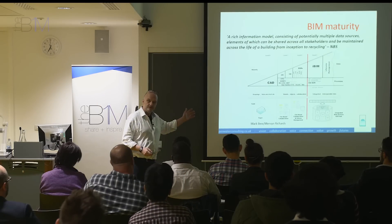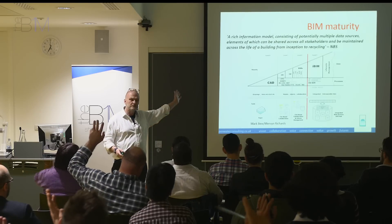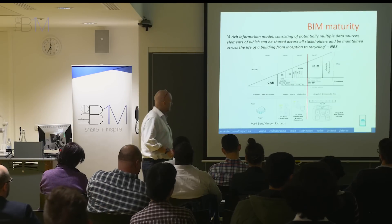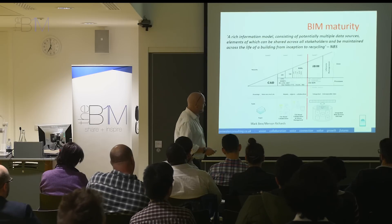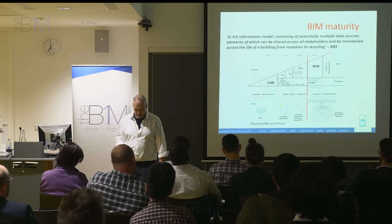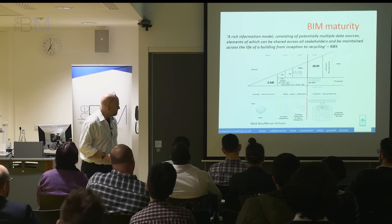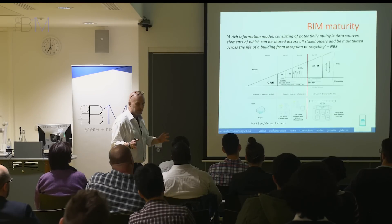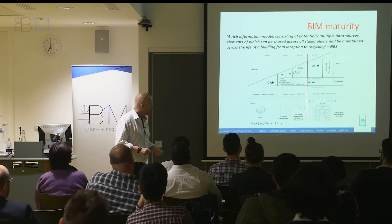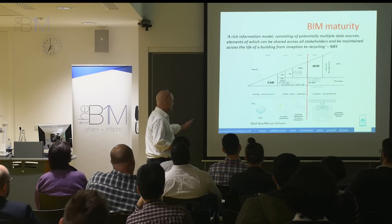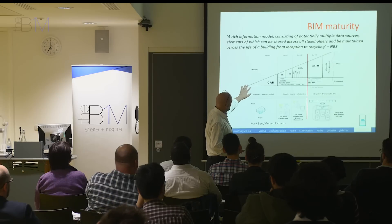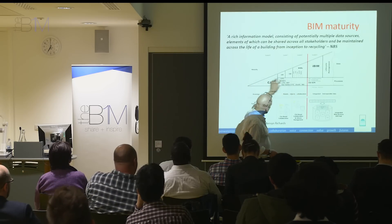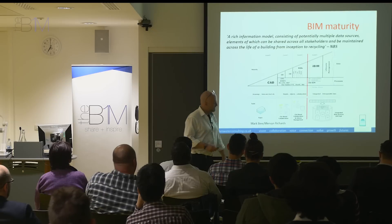So, how many people have seen this diagram before? This is the old — quite old now — BIM maturity wedge produced by Mark Bew and Mervyn Richards, who are two of the leading figures in the UK BIM movement. It just explains the different levels of BIM and the sorts of things that are going on in each stage.